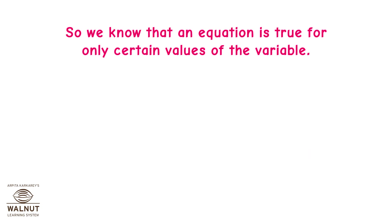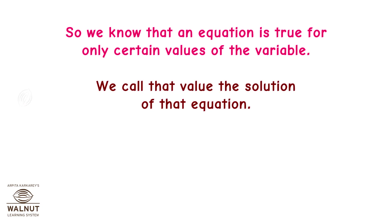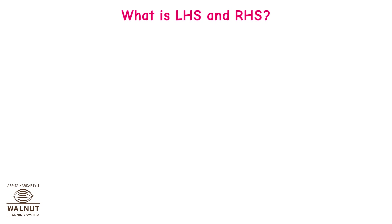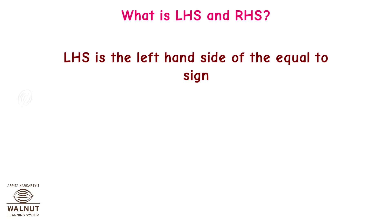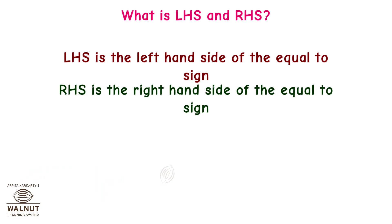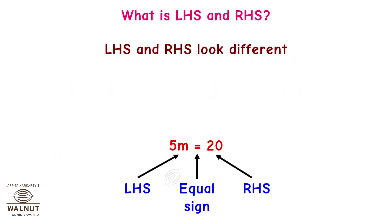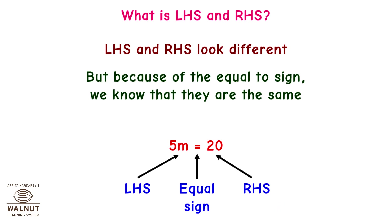An equation is true for only certain values of the variable — we call that value the solution of the equation. When we put the correct value of the variable in the equation, the LHS and RHS become equal. LHS is the left-hand side of the equal-to sign, and RHS is the right-hand side of the equal-to sign.